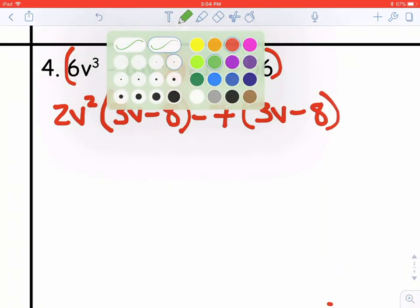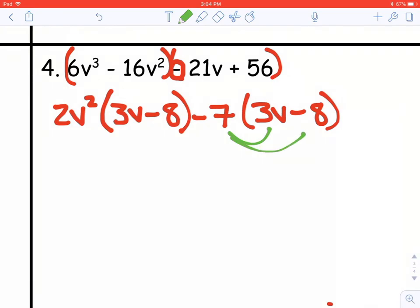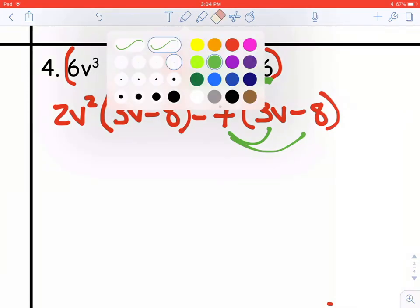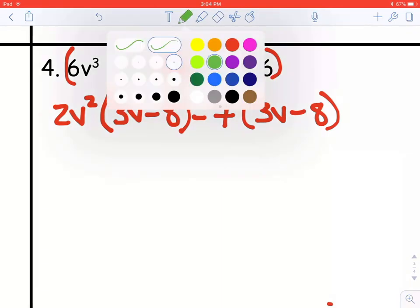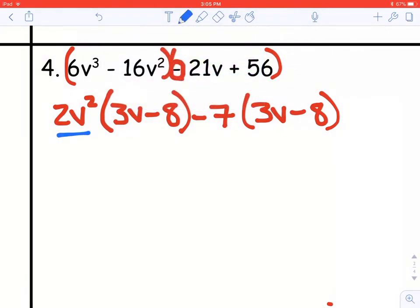So if you take out negative 7, you would need to have a 3v minus 8 left over. Notice when you multiply that back together again, it does equal what was in that parentheses to start with, negative 21v plus 56. So it might seem weird that you change the sign, but it is what you need to do to make them match. All right, so then put the two greatest common factors as your first factor, and then the one they had in common as the second factor. And that's it.